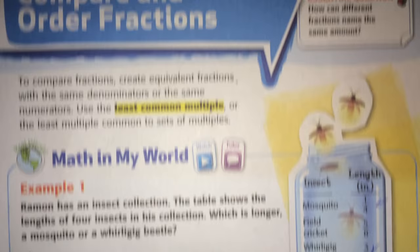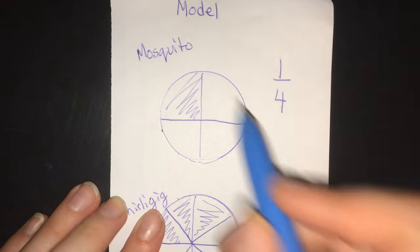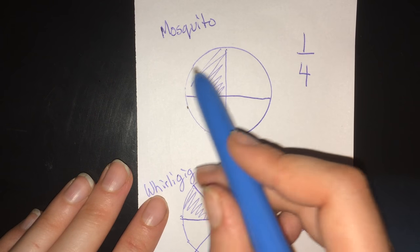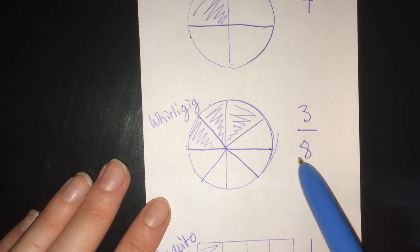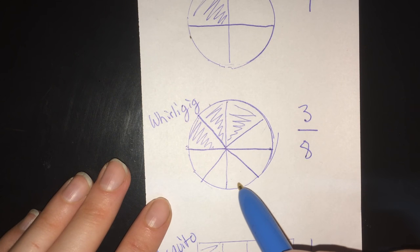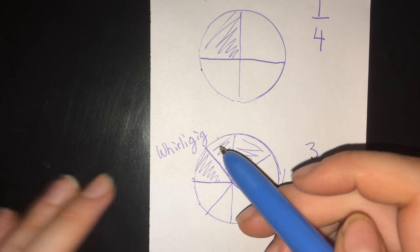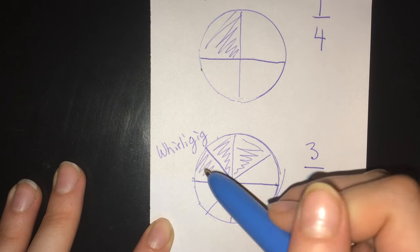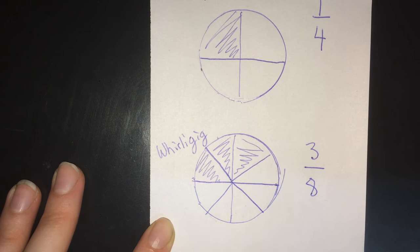Well, the first thing I did was model it. So let's just take a break from this for a second. And I did a model. So the mosquito was one-fourth. So I drew a circle, and I divided it into four pieces and shaded one. And then I drew another circle, and I divided it into eight pieces, and I shaded three of them. And these are the same size circles because I used the same object to trace. So when I'm looking at this, I can already tell that the whirligig beetle is going to be bigger because, look, it's covering more of the circle.